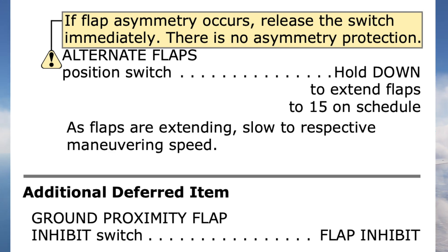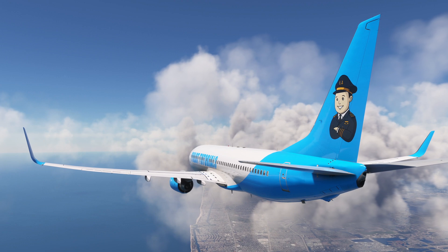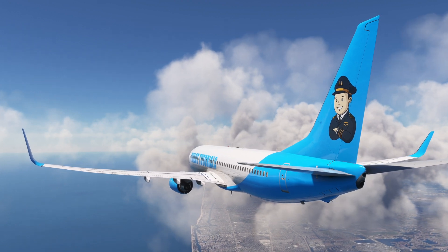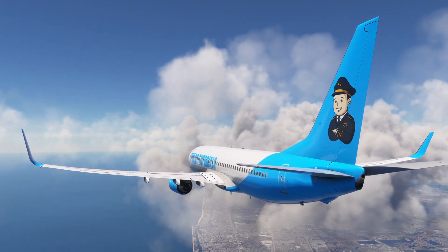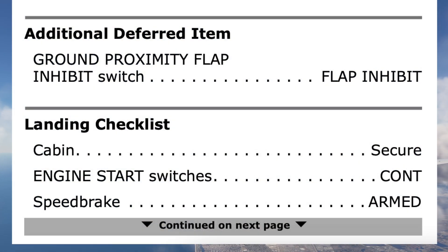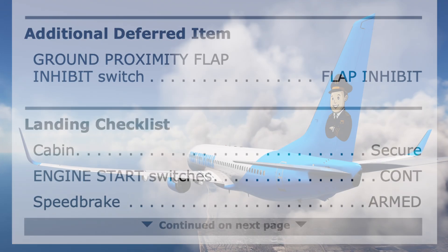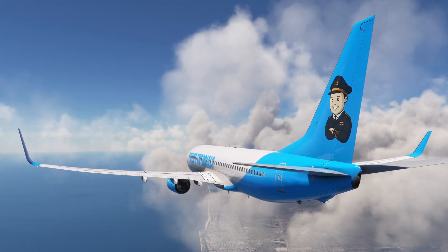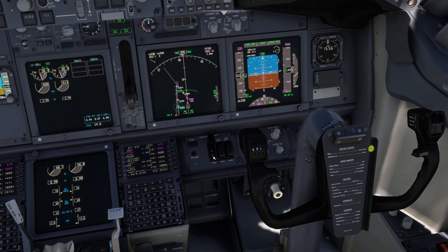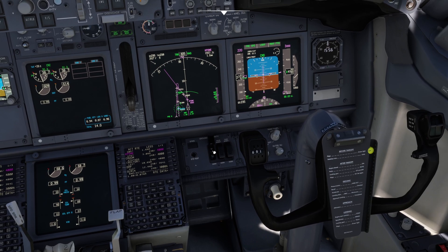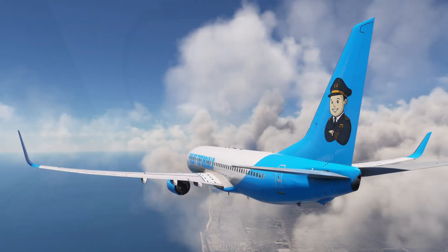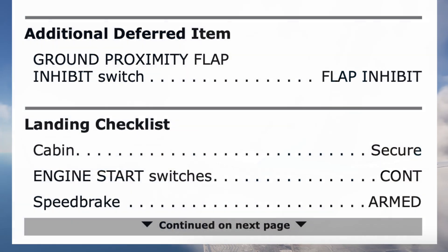Additional deferred item — would you like that now? Yes, continue. Ground proximity flap inhibit switch: flap inhibit. It's inhibited.